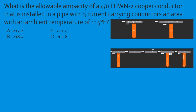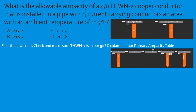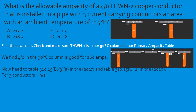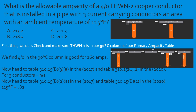Question: What is the allowable ampacity of a 4/0 THWN-2 copper conductor installed in a pipe with three current-carrying conductors in an area with an ambient temperature of 115°F? Confirm insulation is in the 90°C column. 4/0 THWN-2 in the 90°C column is 260 amps. With only three current-carrying conductors, the bundling adjustment does not apply — it only applies for more than three. Correction factor at 115°F is 0.82. So: 260 × 0.82 = 213.2 amps. Select A.